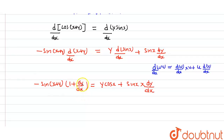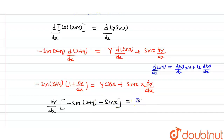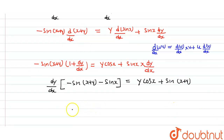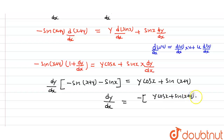Taking dy/dx as common: minus sin(x + y) minus sin(x + y)·(dy/dx) equals y·cos(x) + sin(x)·(dy/dx). Rearranging: dy/dx·[sin(x + y) − sin(x)] equals minus y·cos(x) + sin(x + y), so dy/dx equals [−y·cos(x) + sin(x + y)] divided by [sin(x + y) − sin(x)].